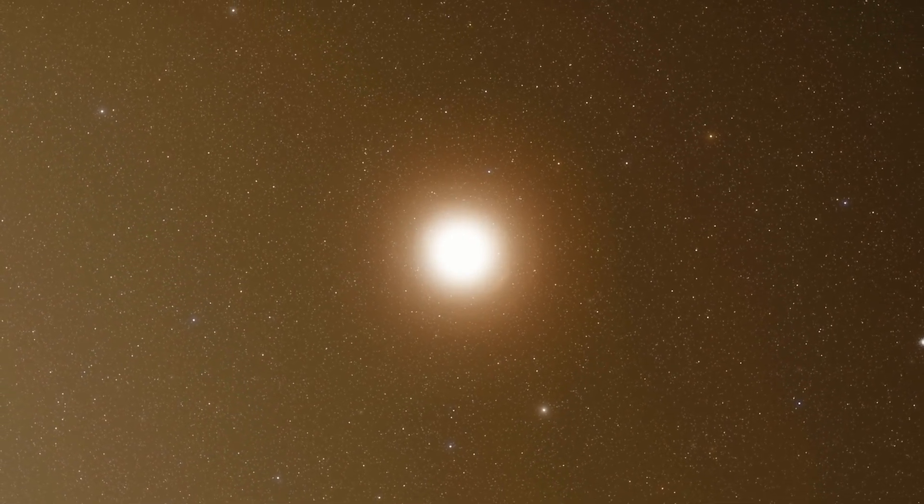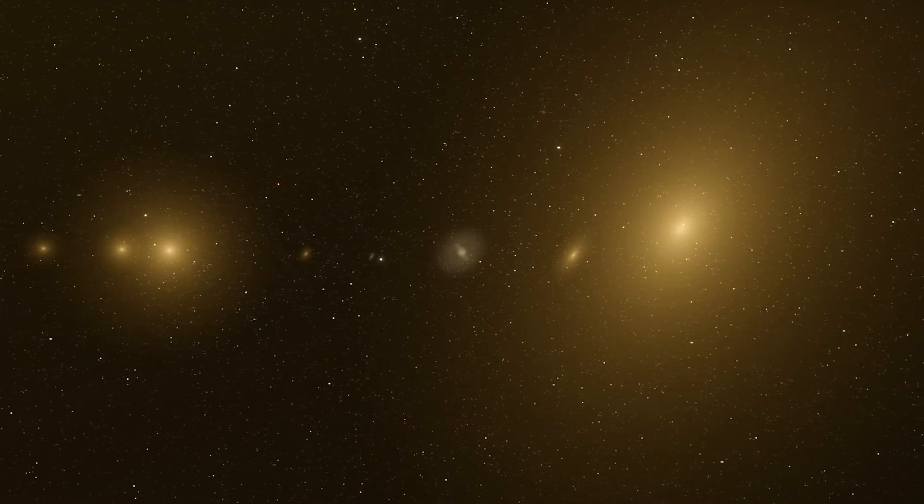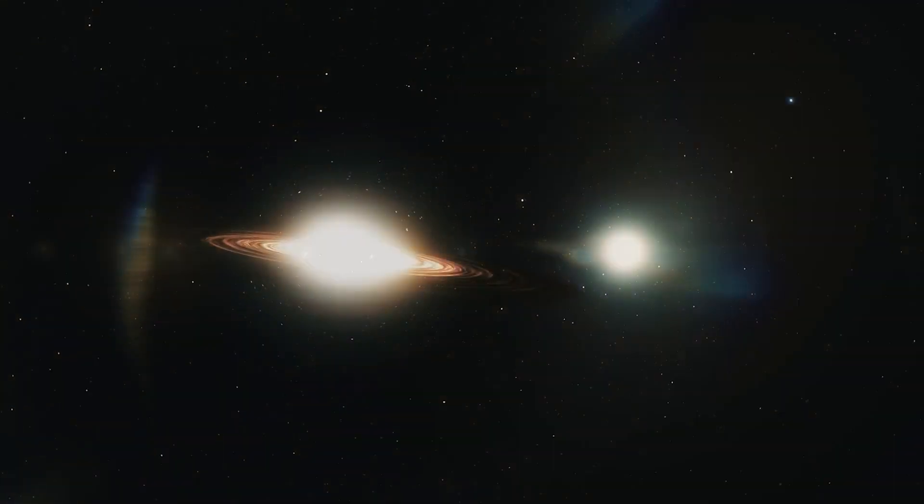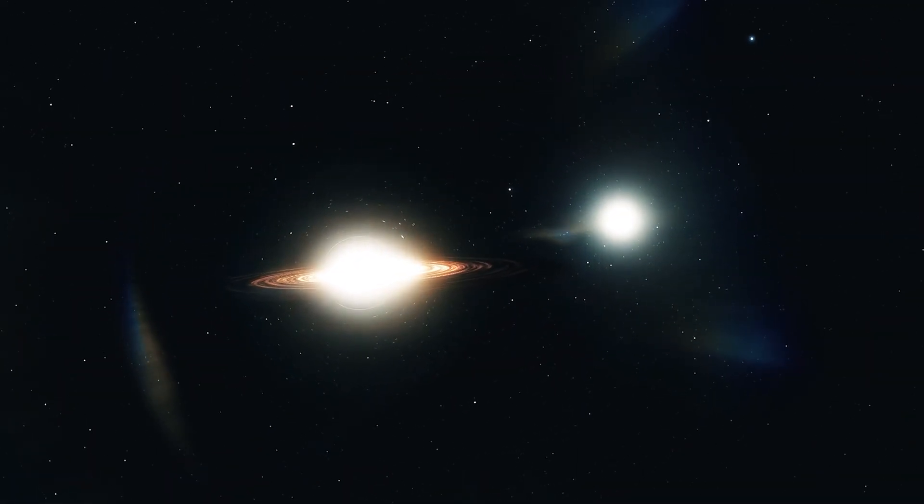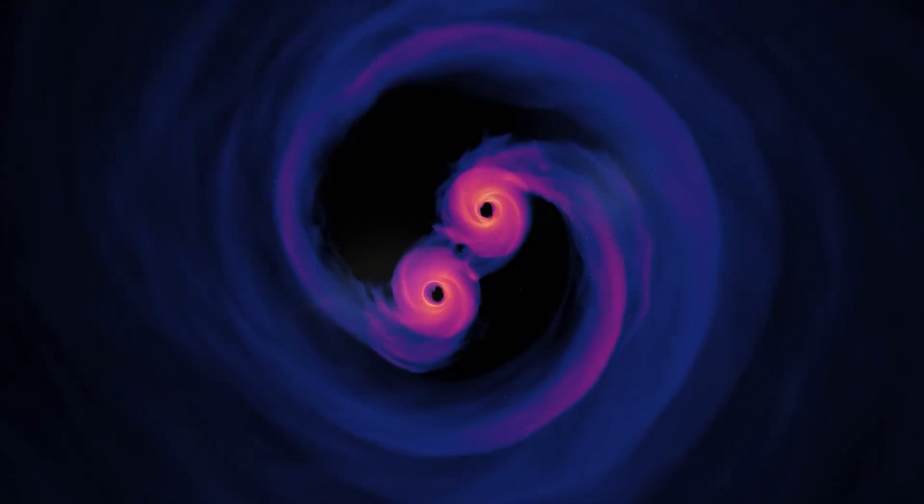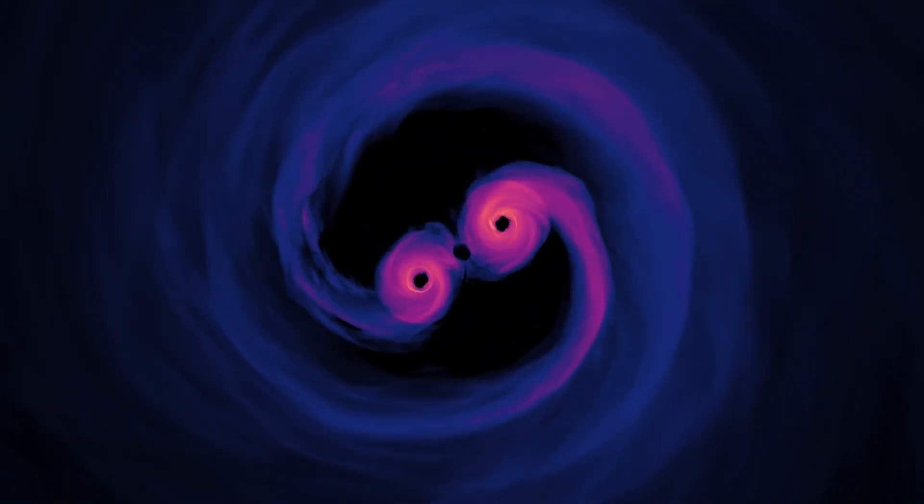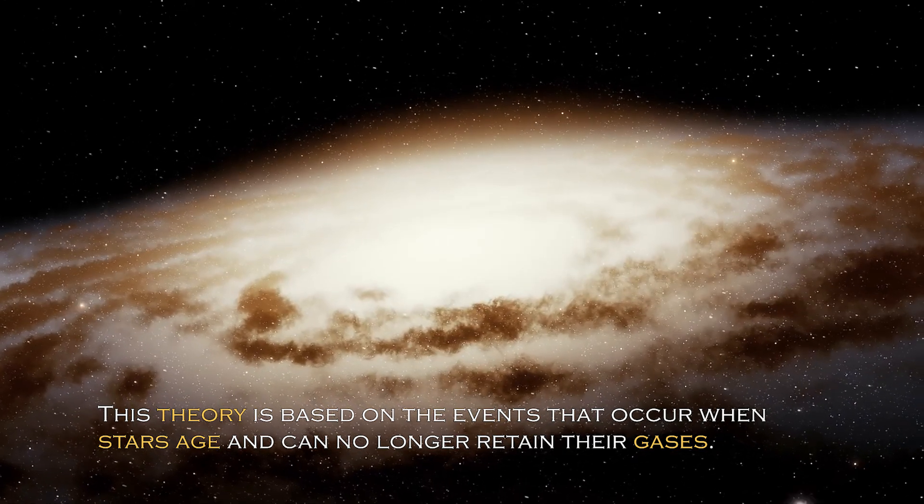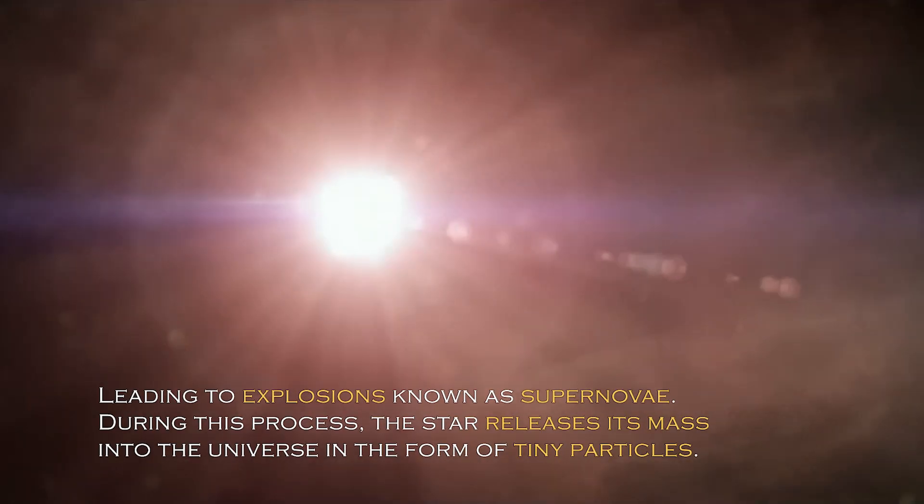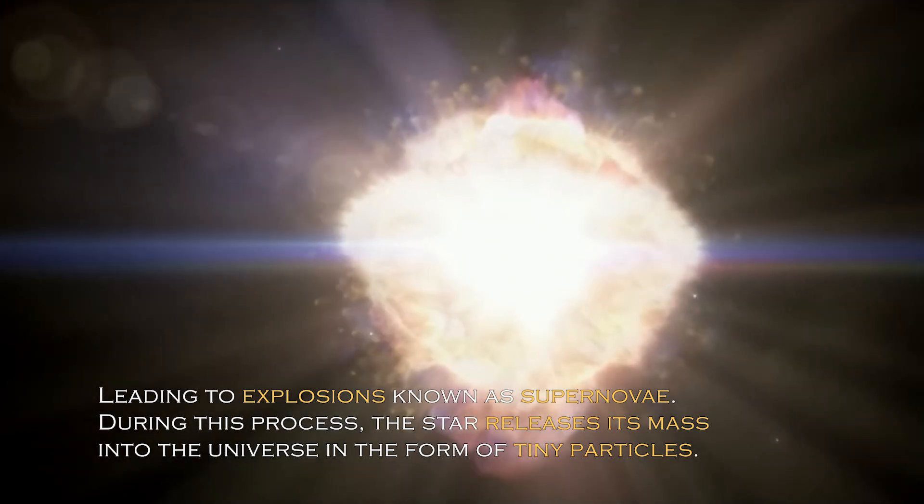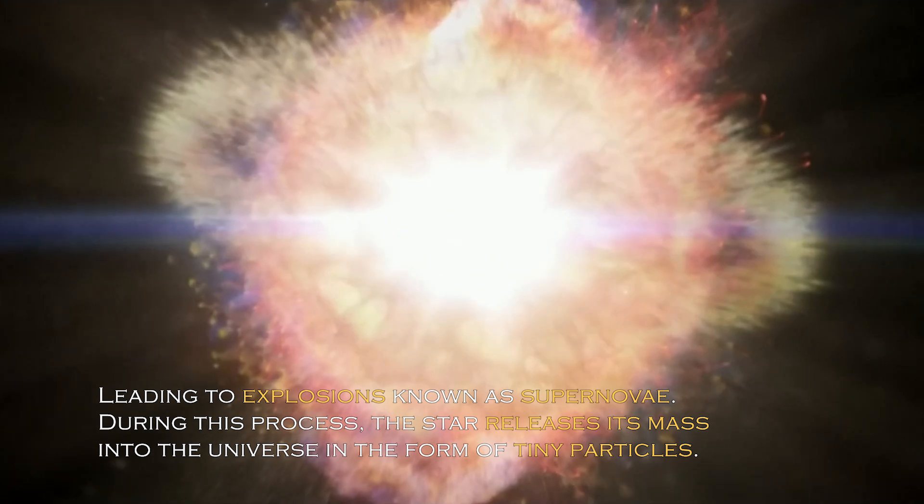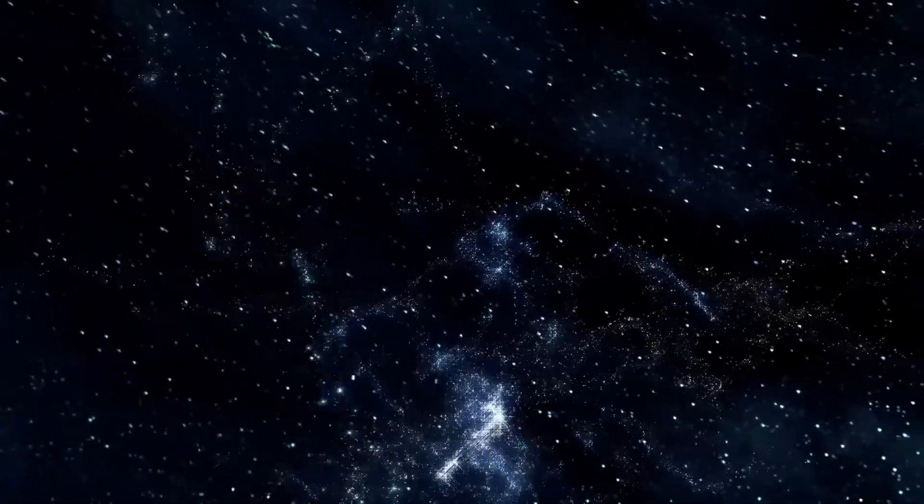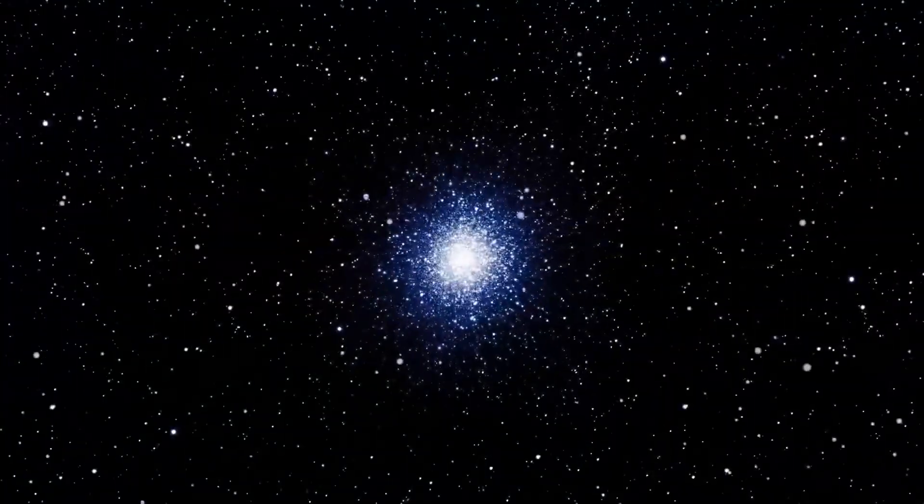Were they destroyed or did they simply change? Some experts have proposed a plausible theory that suggests that the disappearance of these solar systems involves a transformation of their mass. Specifically, these stars and planets could continue to exist in the cosmos in a form that we could not currently detect. This theory is based on the events that occurred when stars age and can no longer retain their gases, leading to explosions known as supernovae. During this process of supernovae, the star releases its mass into the universe in the form of tiny particles. Some people argue that something similar may have happened to this solar system that suddenly disappeared.